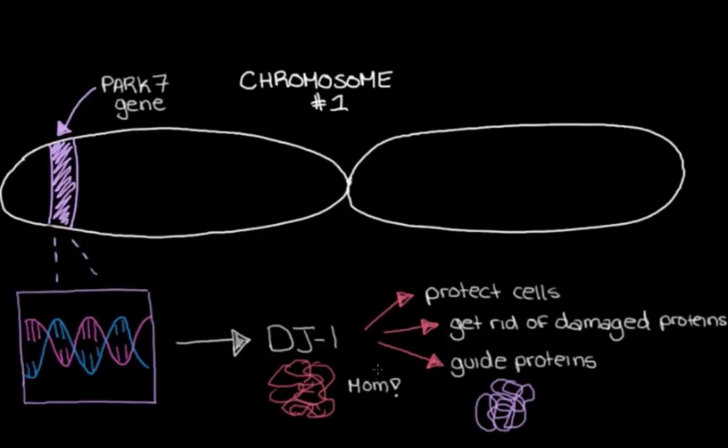Now, this last one's not very mom-like. I'm sure none of our moms would send us off to be degraded. But anyway, so those are some of the main tasks of DJ1. So some mutations in the gene PARK7 can cause Parkinson's disease. And PARK7 is one of those genes where you need to get a mutated copy from both your mom and your dad in order to develop Parkinson's disease. So this would be considered an autosomal recessive cause of Parkinson's disease.